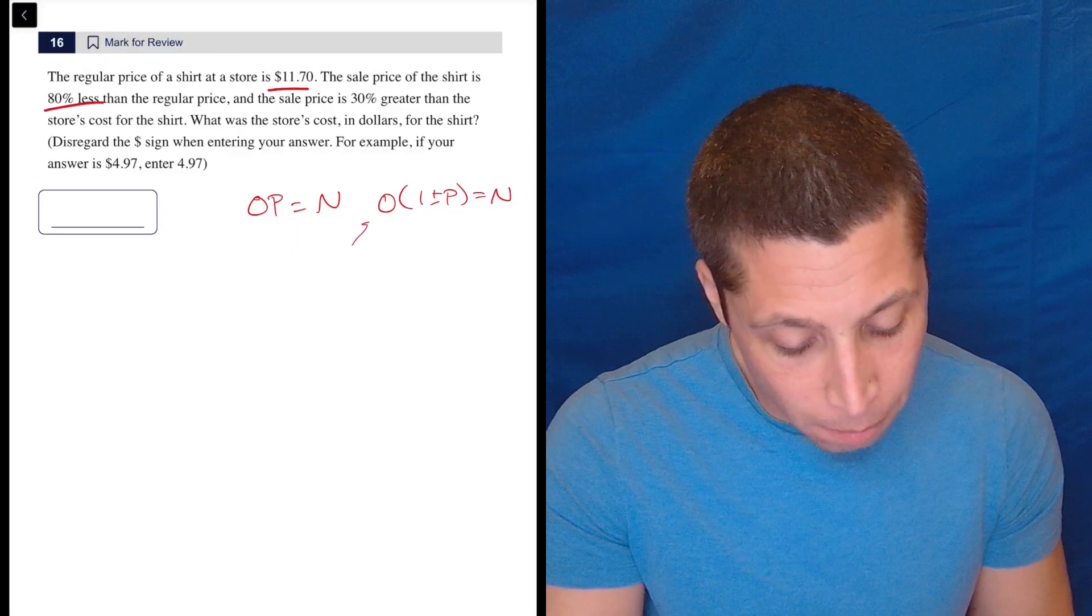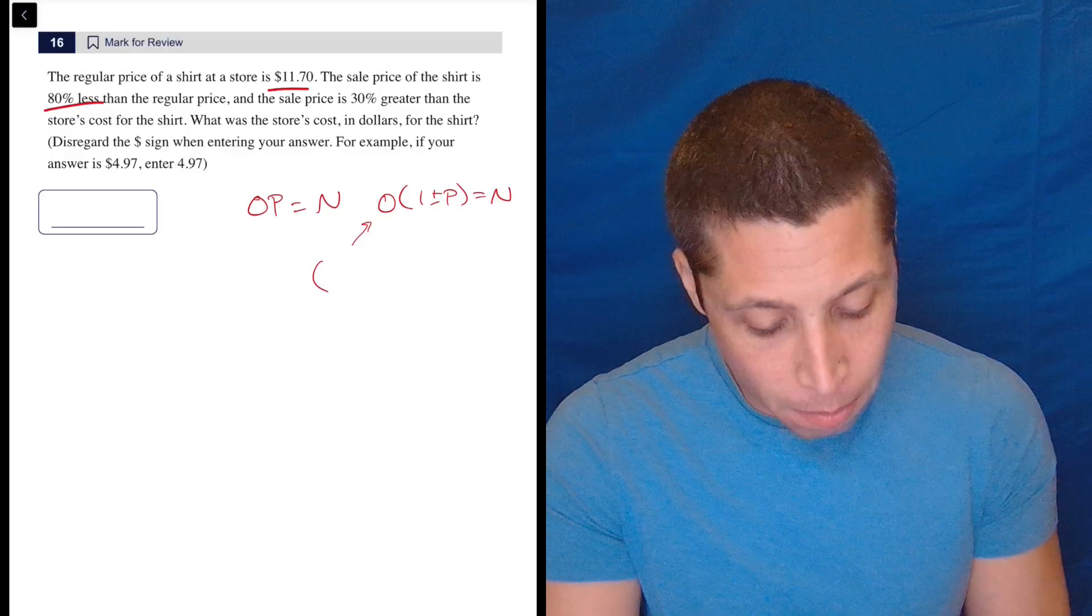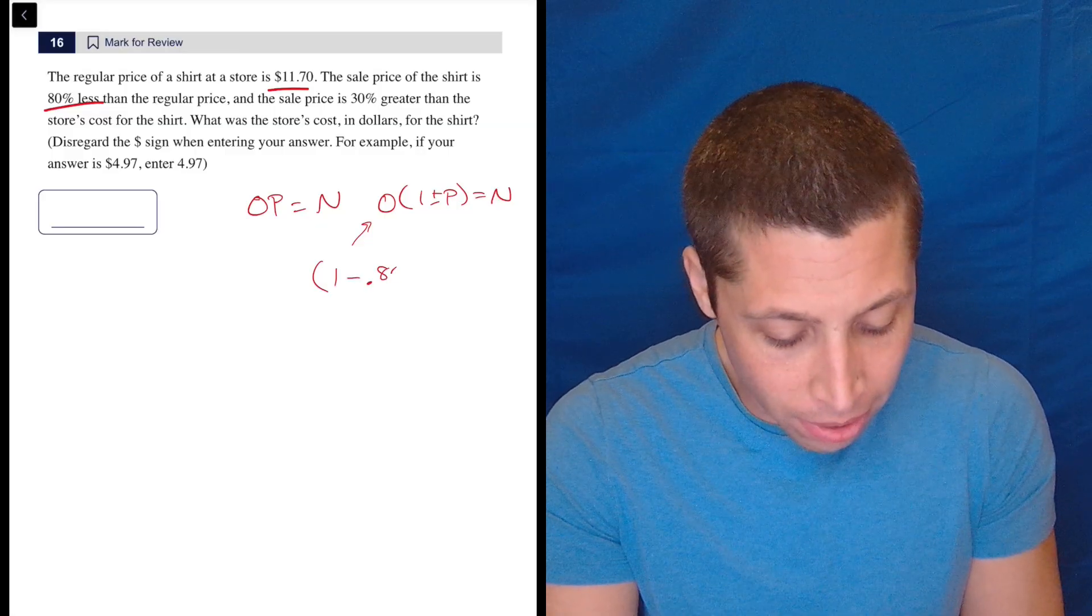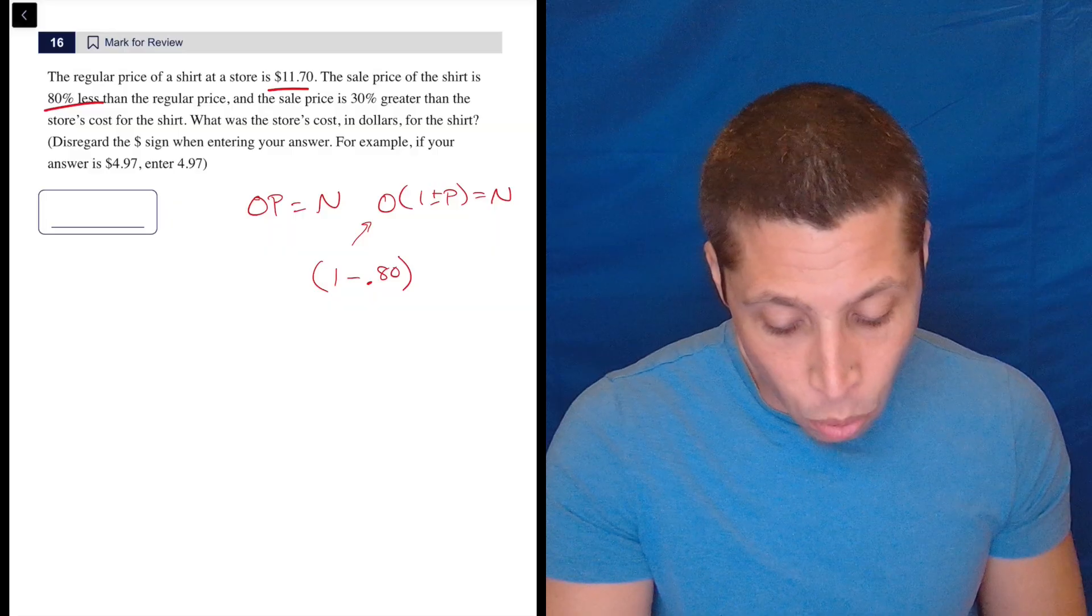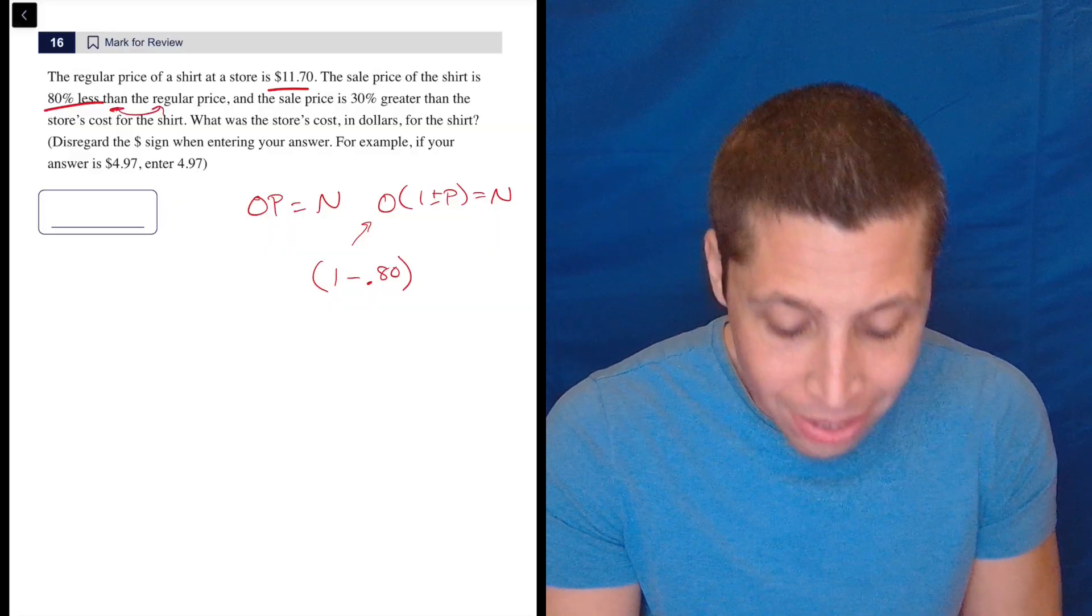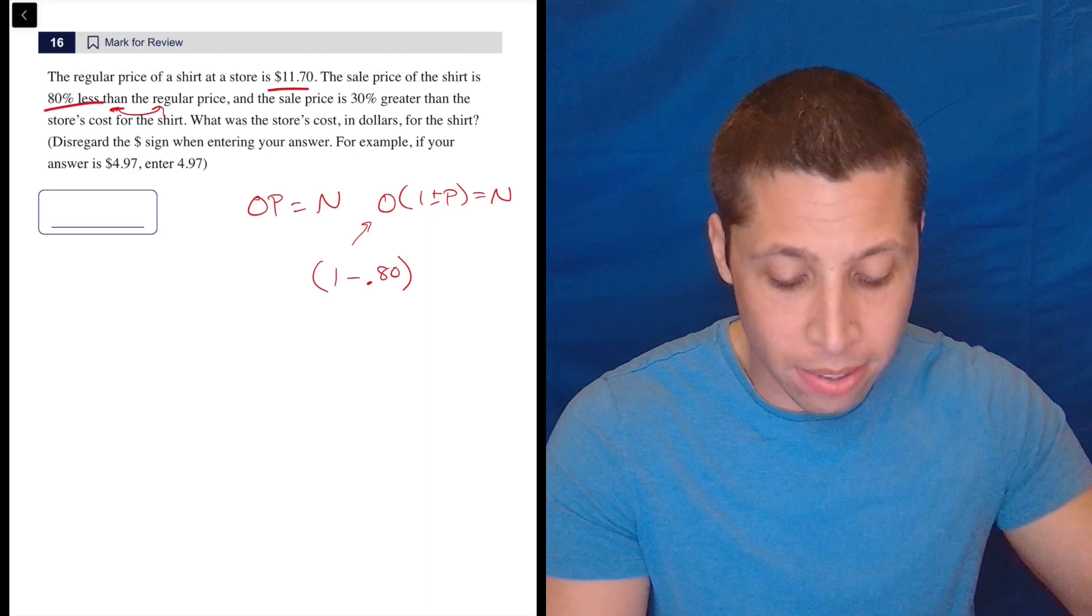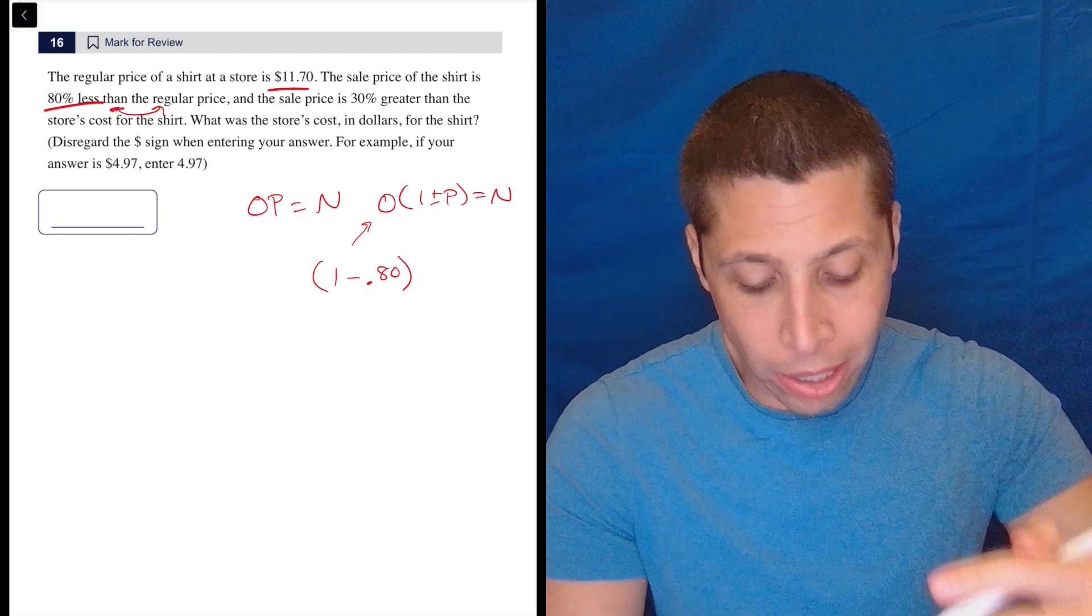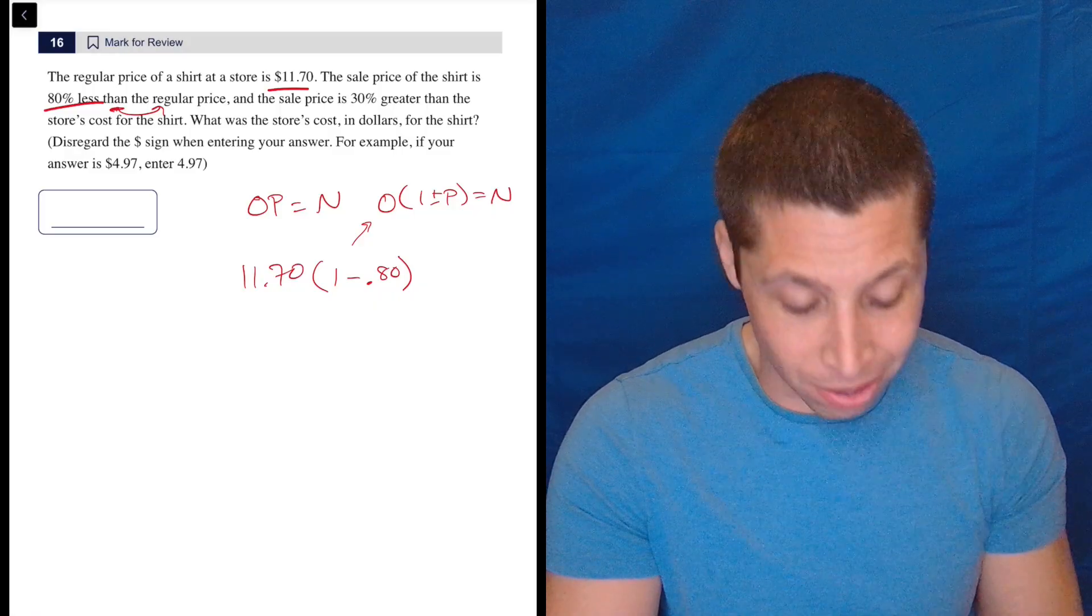We've got to use this formula because we have a change in percent. So 80% less means one minus 0.80 or 0.8 because that's 80% less. What's the original? Well, the then points us to the original value. So the then is pointing us to tell us that the original value, the O is the regular price, which you probably would have figured out anyway, because that's kind of the starting point.